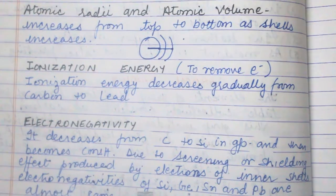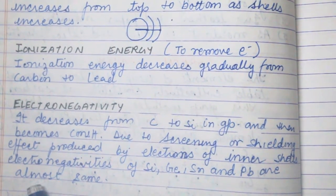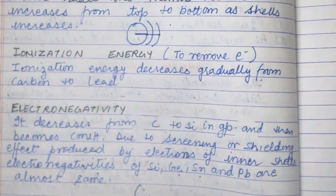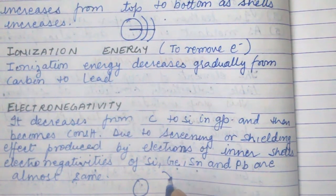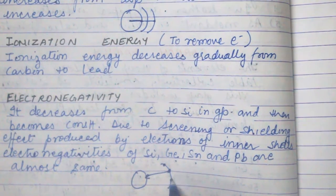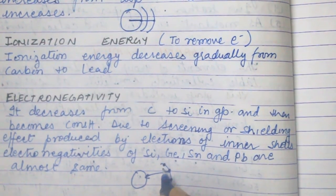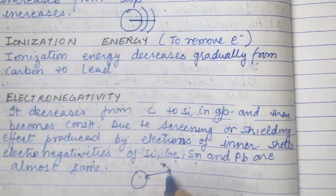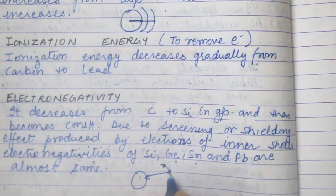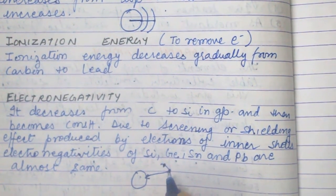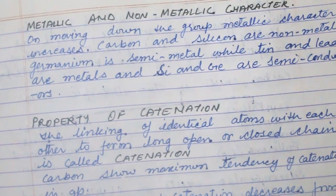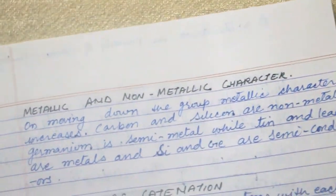The electronegativity of silicon, germanium, tin, and lead are almost the same. The screening effect occurs because while the nucleus attracts the outermost electrons towards itself, the electrons in between — the adjacent inner electrons — reduce or shield this attraction between the nucleus and the outermost electrons. This is known as the shielding effect.